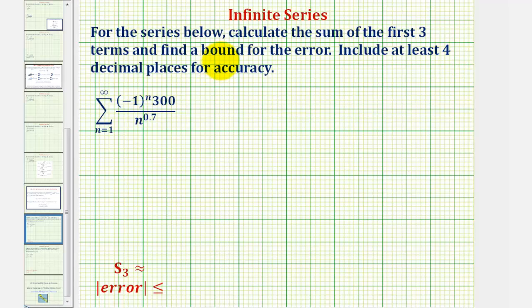For the series below, we want to calculate the sum for the first three terms and find a bound for the error when using the partial sum to approximate the infinite sum.